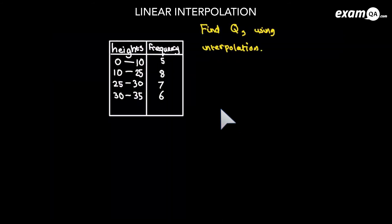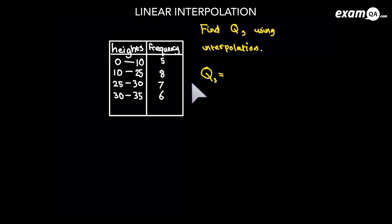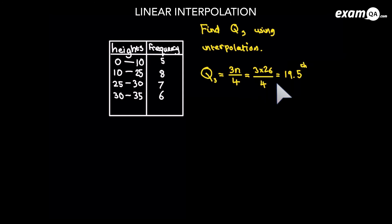Let's try again. In this question, we want Q3, which is the upper quartile. To get that it's 3n over 4, which is 3 times the frequency over 4, and that gives us 19.5. So we want the 19.5th number — just be very careful, don't give 19.5 as your final answer. It is not an answer; it's just which term we're looking for.